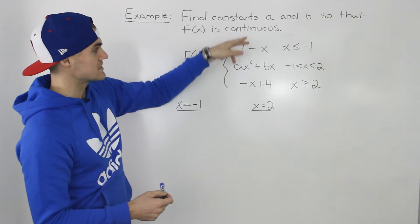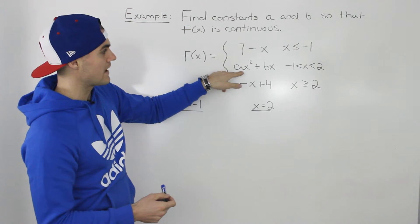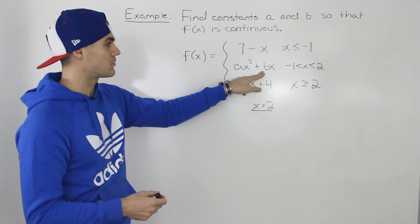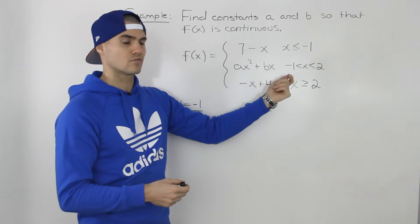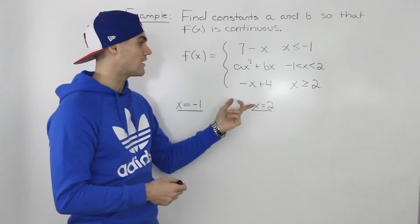Once we have constants a and b, ax squared plus bx is just going to be a parabola. So between negative 1 and 2, that's going to be a continuous function as well.